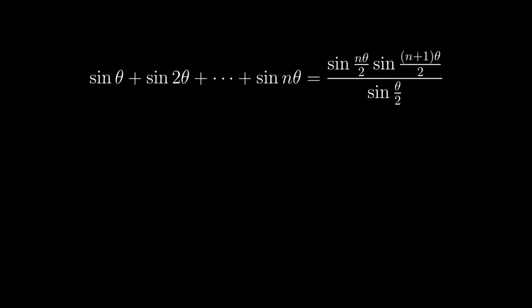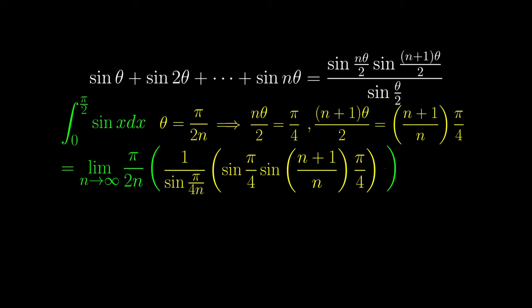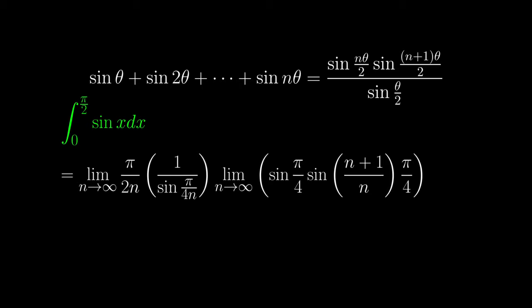In any case, now that we have derived this formula, we can put it into good use. Remember that this is still a video in the series doing integrals without integration, and so we are still calculating the integral. Now we can substitute θ to be π over 2n, and so we finally have this expression as the limit. Then we can split up the limits so that the two limits exist.